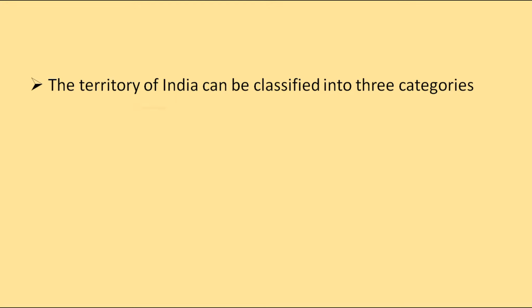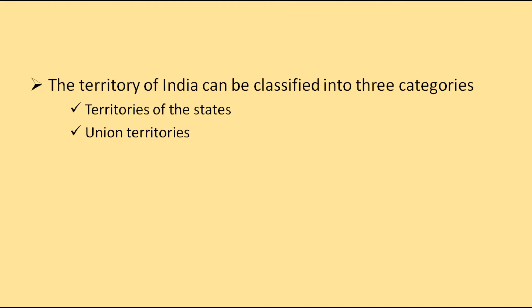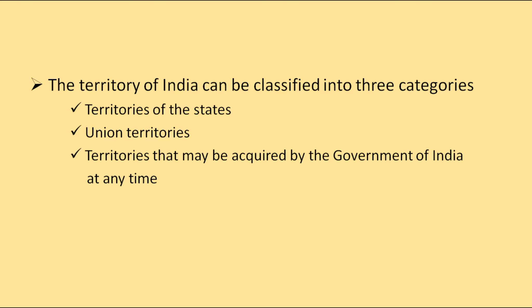The territory of India can be classified into three categories. First, the territories of the states — at present there are 28 states. Second, the Union territories — at present there are 8 Union territories. Third, territories that may be acquired by the Government of India at any time, for example, areas such as Sikkim, Goa, Pondicherry, and others acquired by means of various police actions.